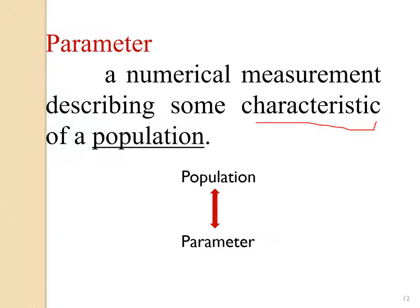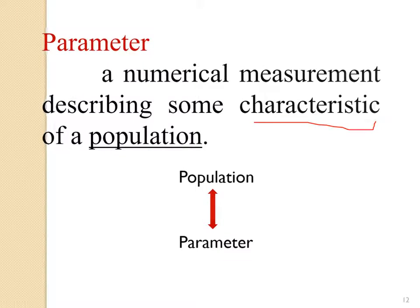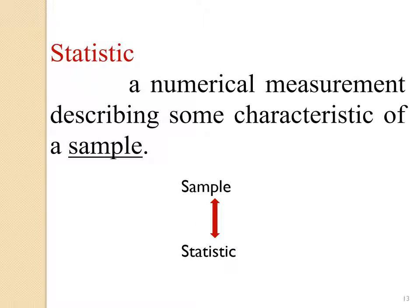That's why we present our final conclusion for the general population. A statistic is a numerical measurement describing some characteristic of a sample. While parameters describe the population — population mean, population standard deviation, population variance — statistics describe the sample: sample mean, sample standard deviation, and sample variance are all called statistics.